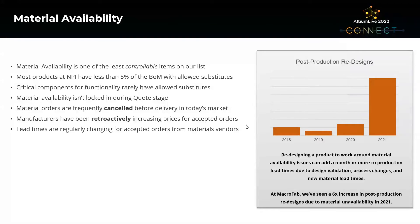In a few cases, a purchase order is placed, everyone accepts it, we're waiting for delivery, and now the price is changing. As a contract manufacturer, we can't just authorize new prices for materials — we have to go back to the customer for approval. Historically, material issues impacting products already in production were very rare. But in 2021, at Macrofab we've seen a 6x increase in post-production redesigns due to material unavailability, where a core material for a product suddenly became unobtainable.